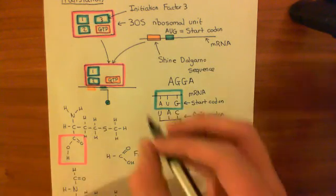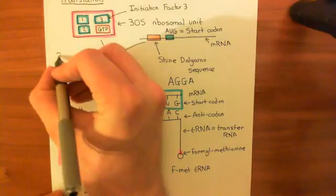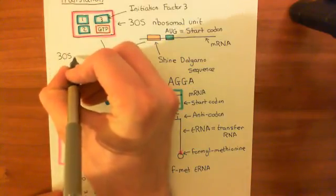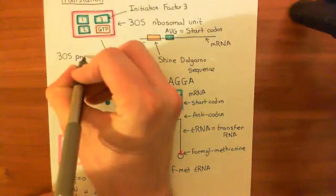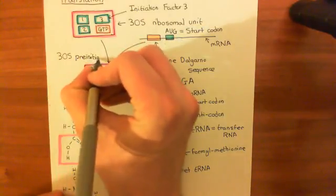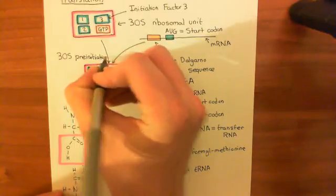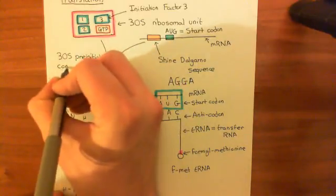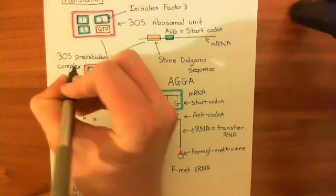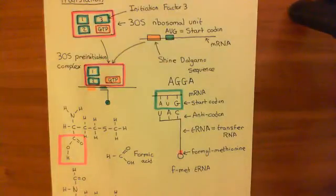This structure that we have now created is what is known as the 30S pre-initiation complex. We'll call it there for this video and discuss in the next video how we proceed from here.